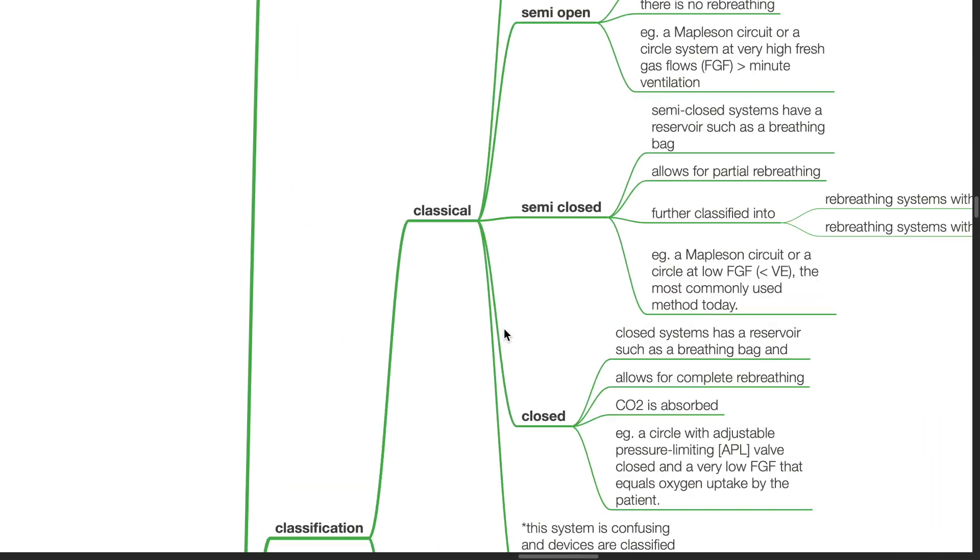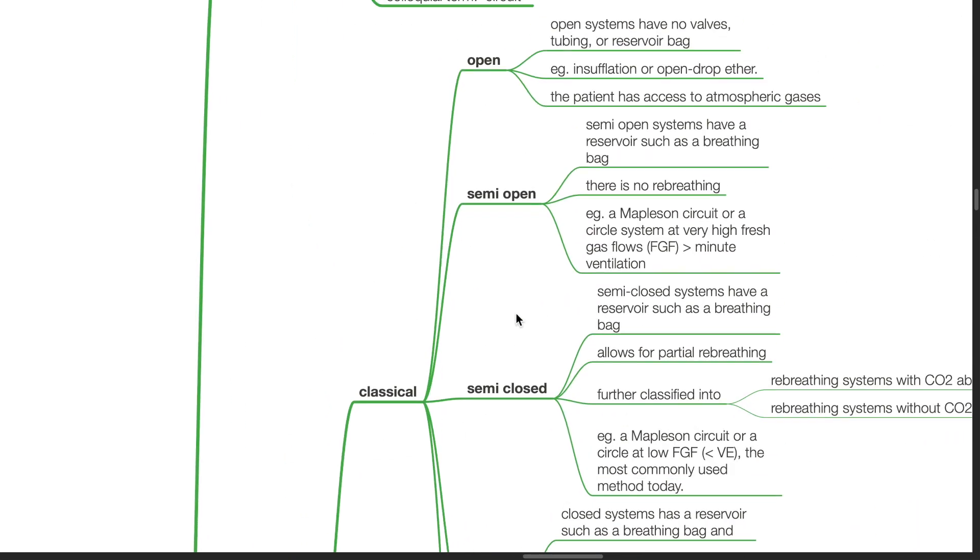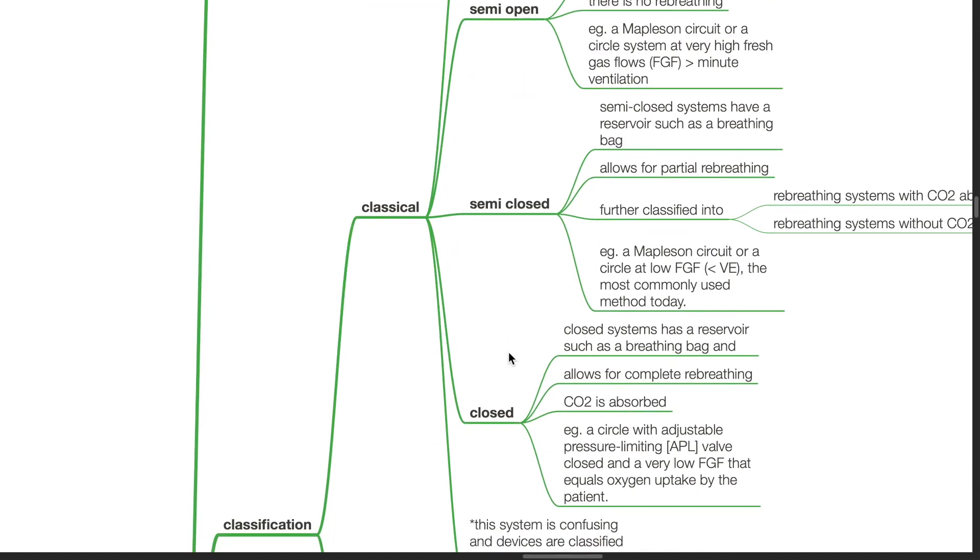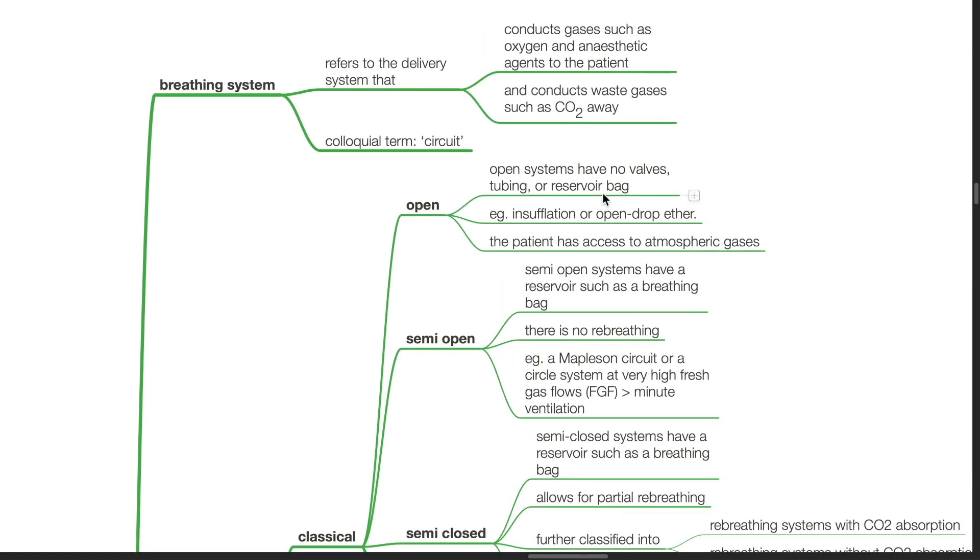Classification. The classical classification of breathing systems classifies them as open, semi-open, semi-closed or closed. Open systems have no valves, tubing or reservoir bag, for example insufflation or open drop ether. The patient has access to atmospheric gases.